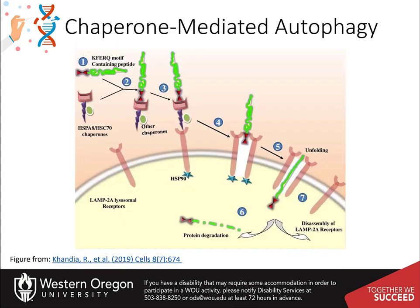Chaperone-mediated autophagy, or CMA, is induced by physiological stresses such as prolonged starvation, and involves the heat shock cognate proteins HSC70 and HSPA8. The heat shock chaperone recognizes KFERQ motifs in target proteins and targets them for degradation in the lysosome. Note that about 30 percent of cytosolic proteins have these target degradation sequences that become exposed when the protein is damaged or misfolded. The CMA pathway delivers target proteins across lysosomal membranes into the lysosomal lumen by interacting with lysosome-associated membrane protein type 2A, or LAMP2A, receptors. Hence, CMA differs from microautophagy and macroautophagy as it does not require vesicular trafficking.